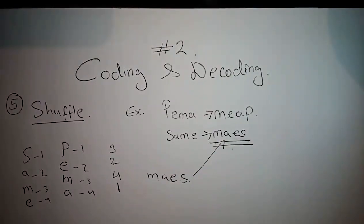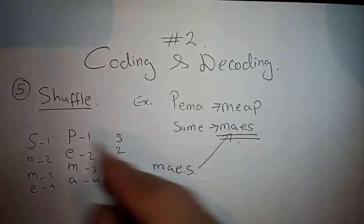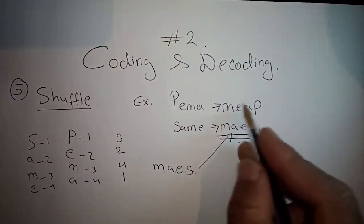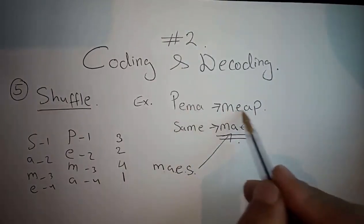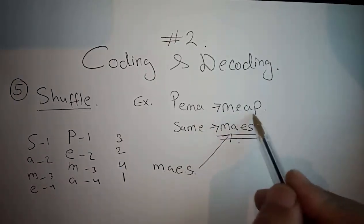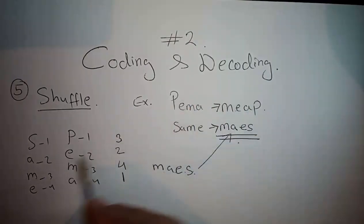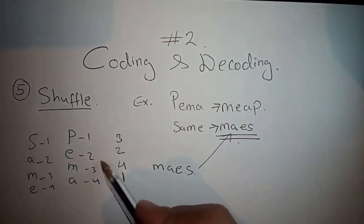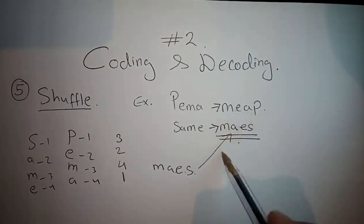This is the fifth type of coding called shuffle. When you see this type, you have to shuffle the letters. It can be three or four terms or even four words. In case the number increases, you can use this formula to check the sequence.